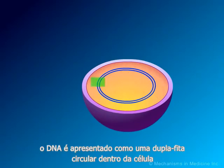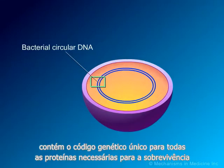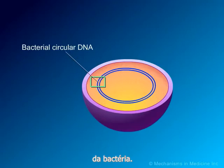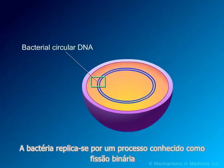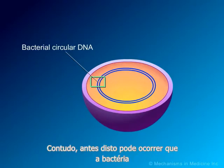The DNA is shown as a circular double strand within the bacterial cell. Like the DNA of all living organisms, it contains the unique genetic code for all of the proteins required for bacterial survival. Bacteria replicate by a process known as binary fission, whereby one bacterium separates into two new daughter cells.